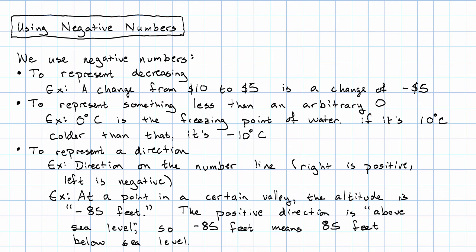Another example might be at some point in a valley somewhere, the altitude is described as negative eighty five feet. Altitude of a location describes how far that place is above sea level. So if the positive direction means above sea level, the negative direction is below sea level. That negative eighty five feet means eighty five feet below sea level.